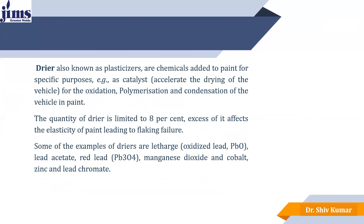Next is the dryer, also known as the plasticizer. These are chemicals used in paint which accelerate the drying capacity or drying power of the paint. The quantity of dryer is limited to 8%. Excess of it affects the elasticity of paint leading to flaking failure. Some of the best examples of dryers are letharge, lead acetate, red lead, manganese dioxide, cobalt, zinc, and lead chromate.